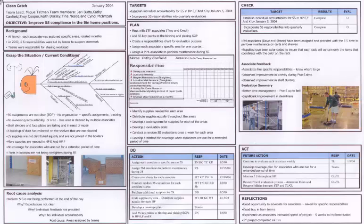And so I want to draw attention here. This is a clean catch which is an internal name for the process and objective: improve 5S compliance in the bin home positions. Now this is not Toyota manufacturing but this is the supply parts distribution arm of Toyota in the background.